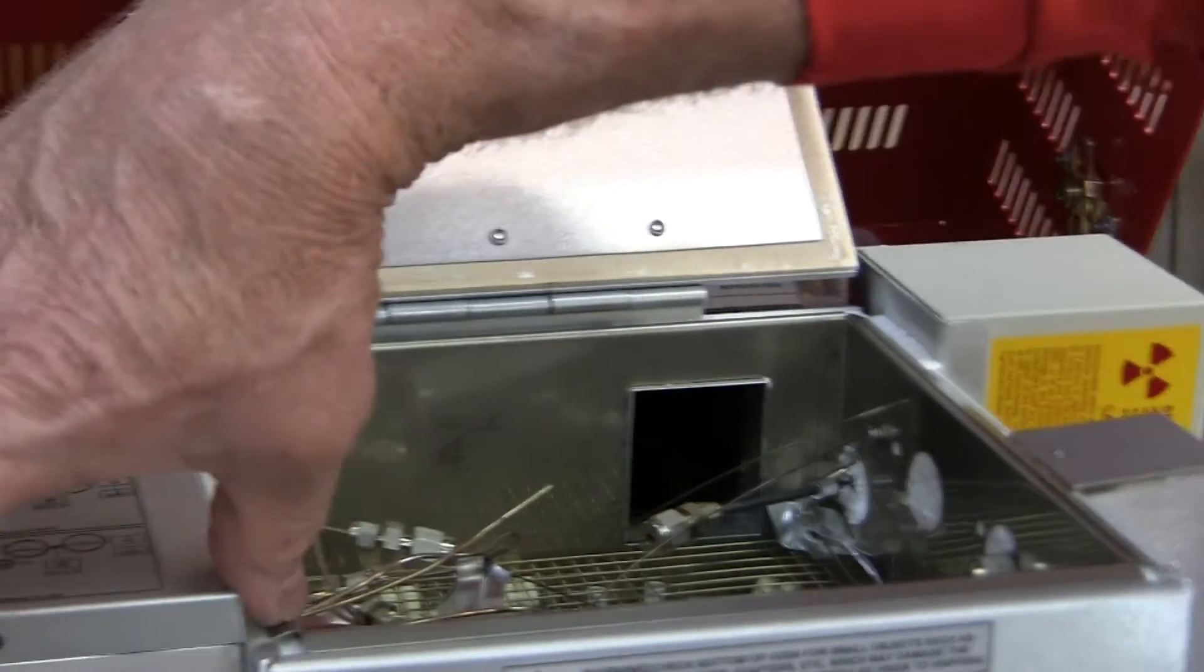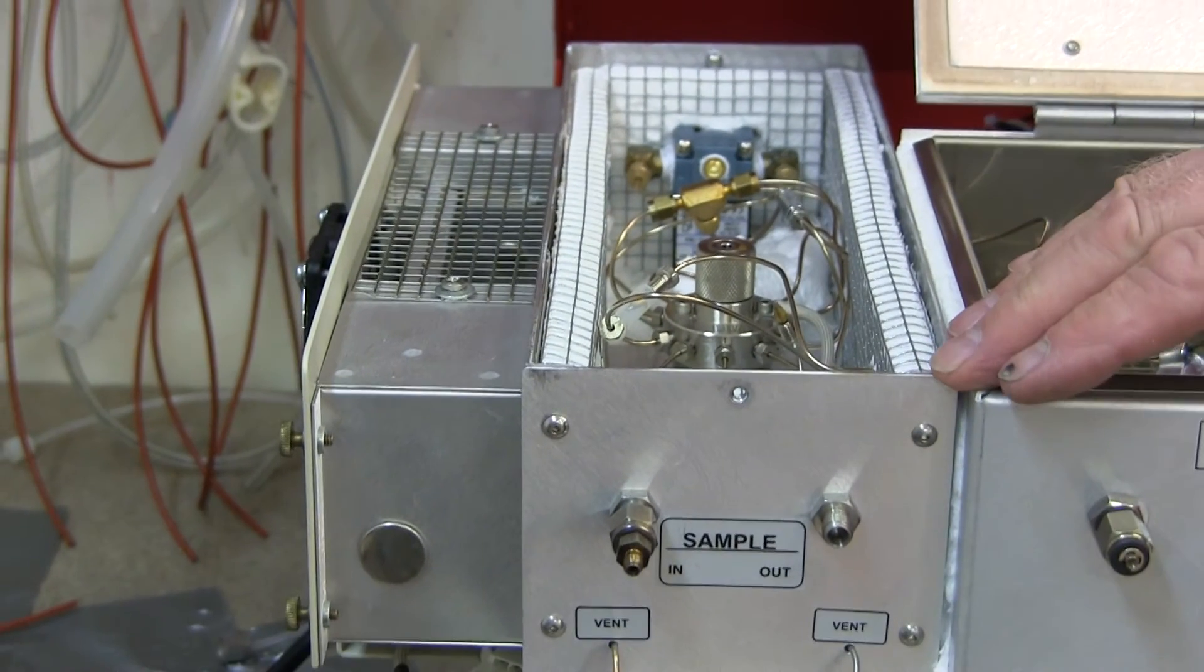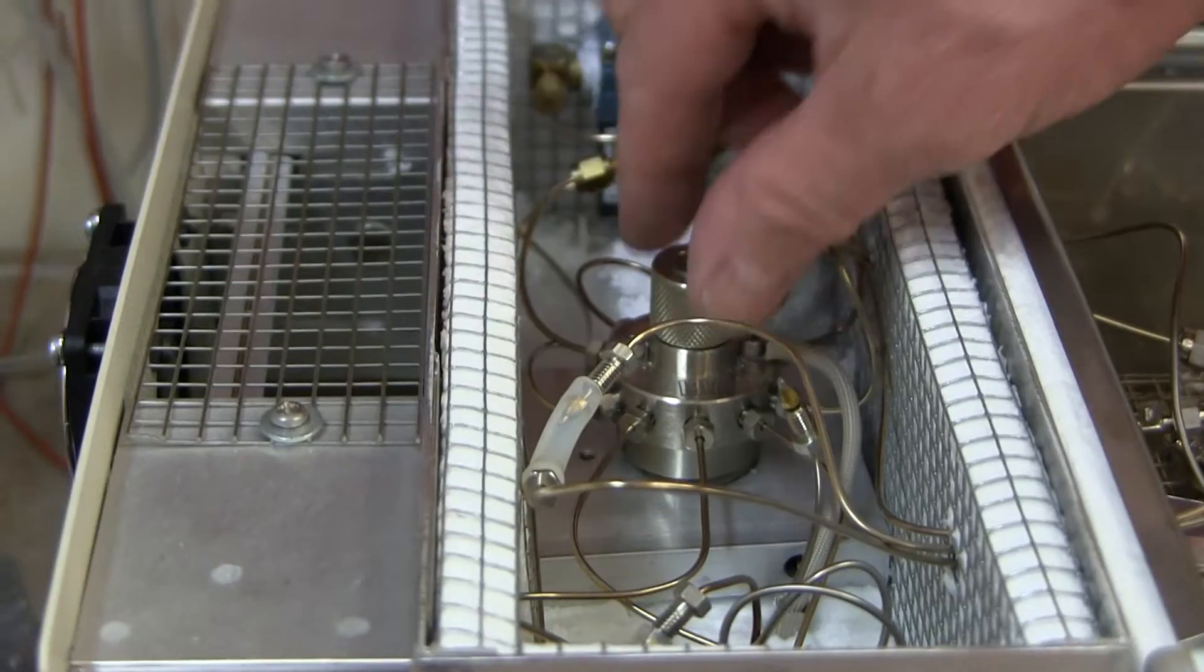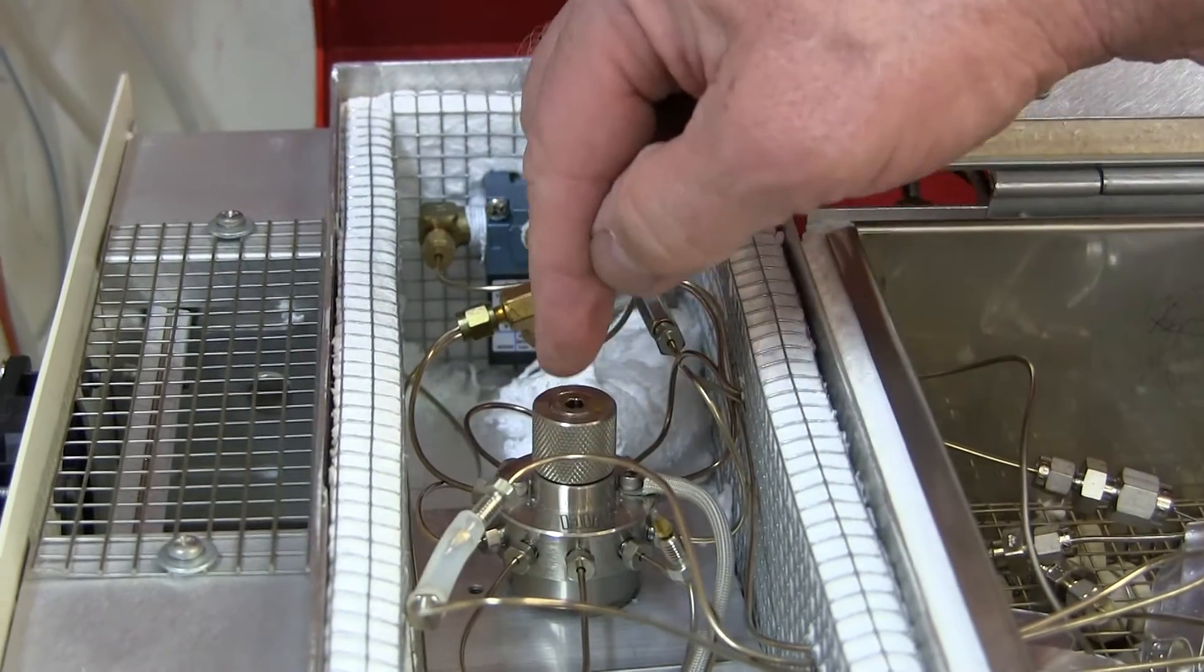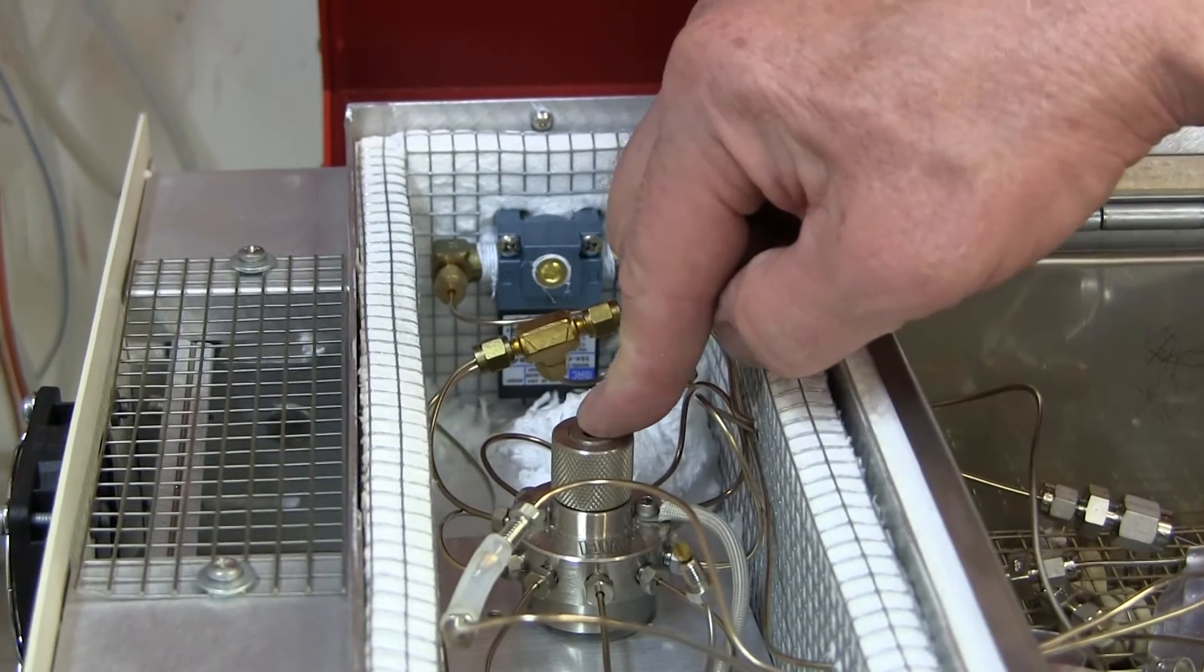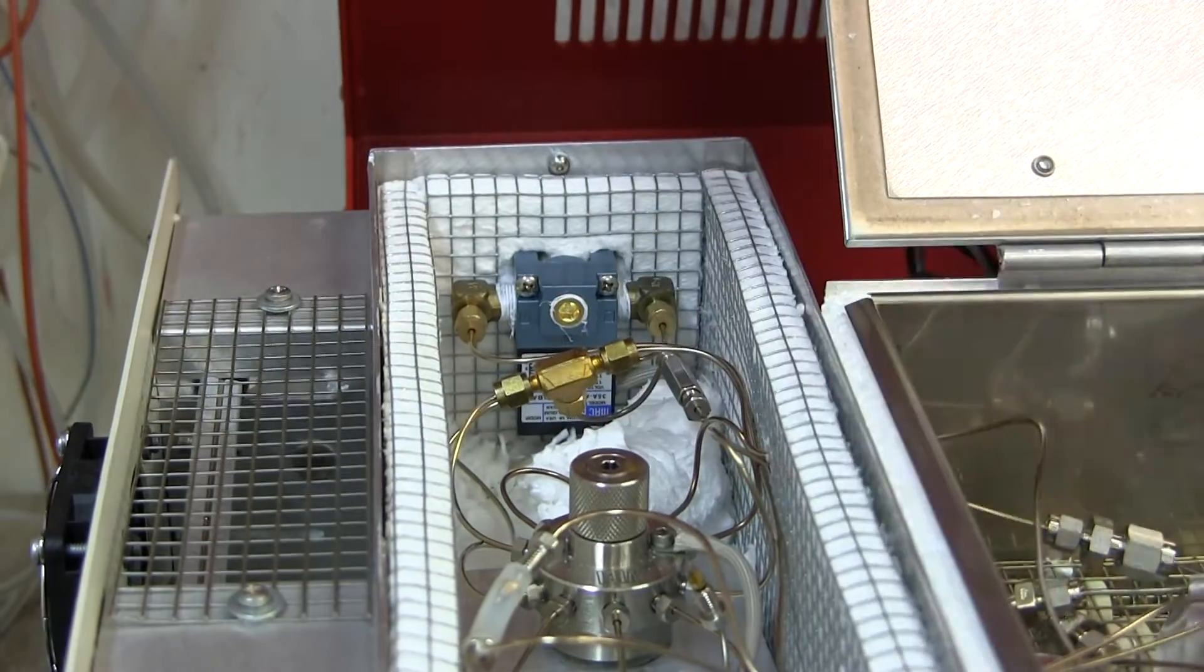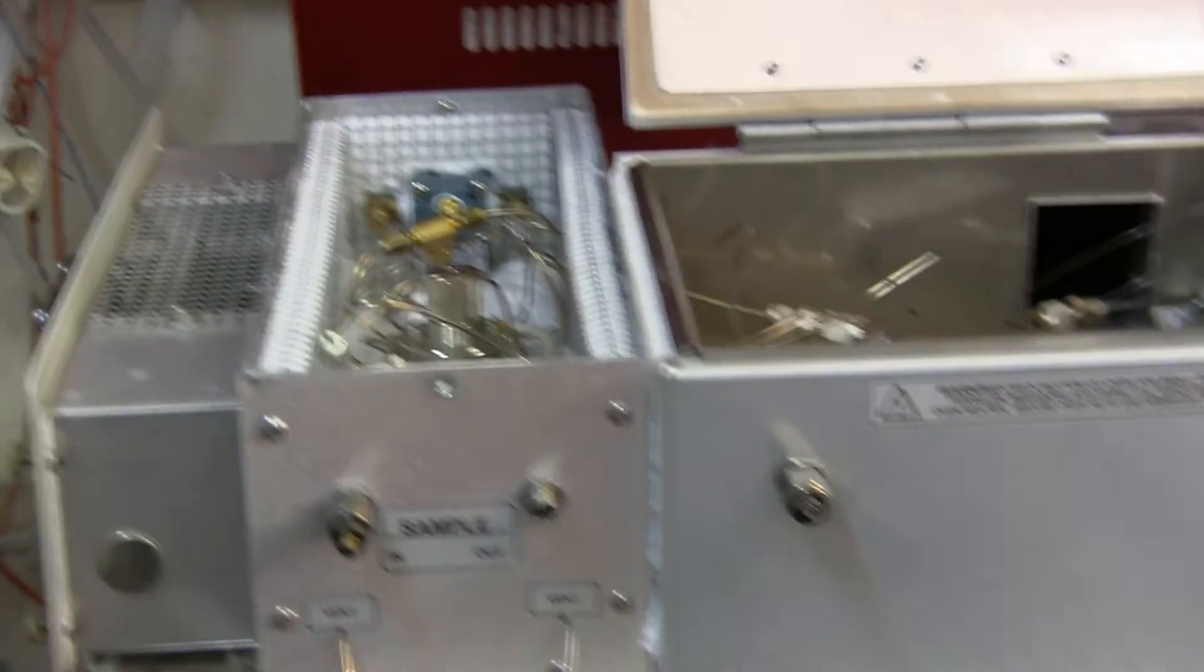This is the valve oven. Some GCs have this valve oven and some don't. It's another option that you order depending on what it is that you want to measure. This is a valve that does a gas injection of whatever is in a tube called a loop that's connected to the valve. You can have up to three valves in this valve oven. The valve oven is also controlled by the front panel temperature controls.